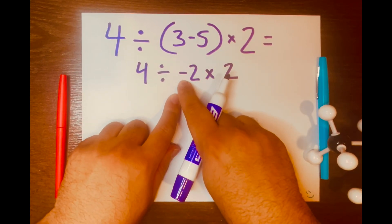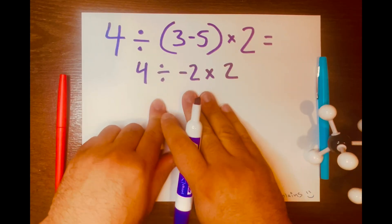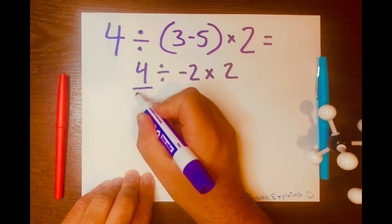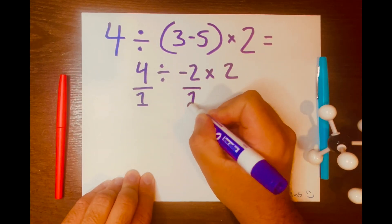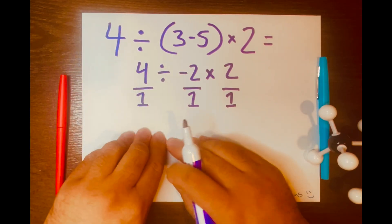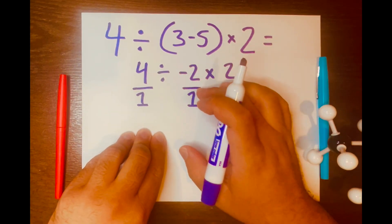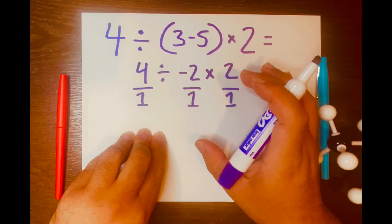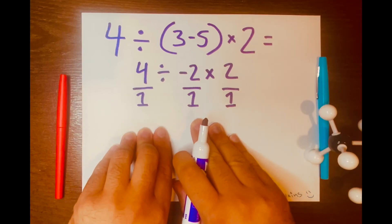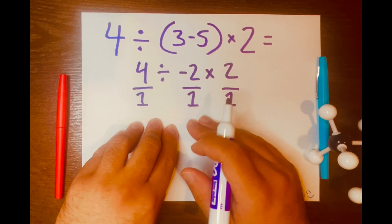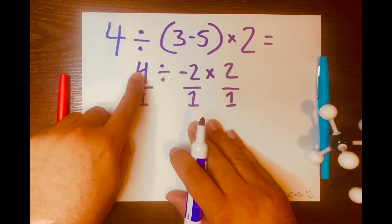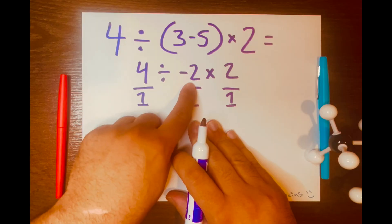Don't get that symbol confused with minus — that is a negative. And I want to turn these numbers into fractions to make the math easy. We know that 4 over 1 equals 4, so it doesn't change the 4. Same goes for negative 2 over 1 — it does not change negative 2. And then 2 over 1 does not change the 2. So now I'm thinking of the method called keep, change, flip, because we're going to work with 4 divided by negative 2 first.